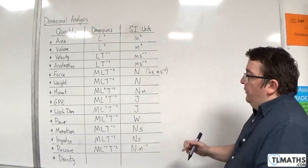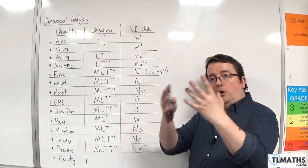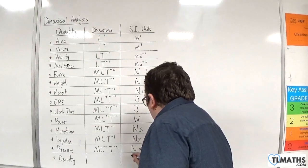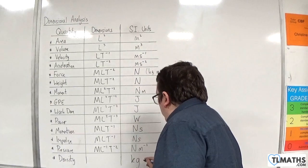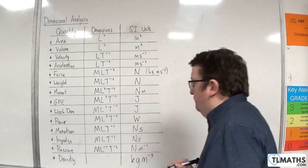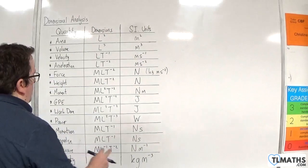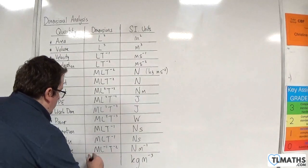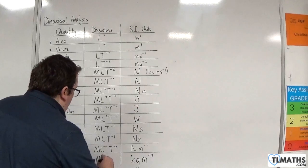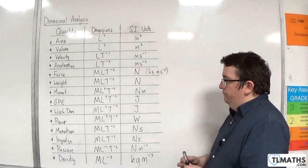Density — the units for density are kilograms per cubic metre: how much of the stuff do you have inside a volume? So, kilograms per cubic metre gives mass (M) per L cubed, which is M, L to the minus three.